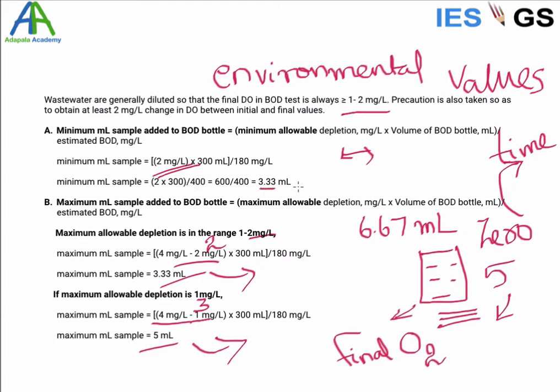So for minimum 2 ml oxygen consumption, what should be the sample size? It is 3.3 ml. That means that if you are diluting the sample size 3.3 ml, there is a chance that oxygen consumption will be very low such that we cannot properly measure it.